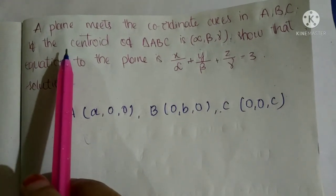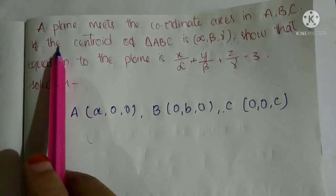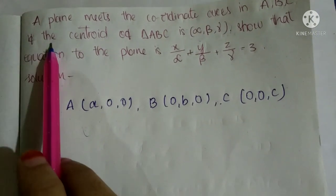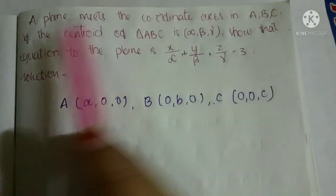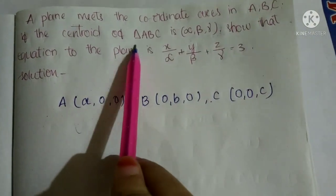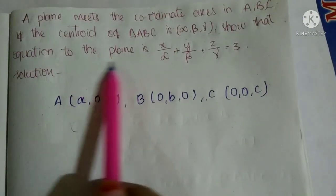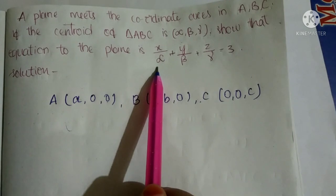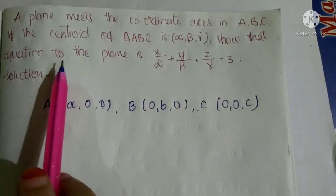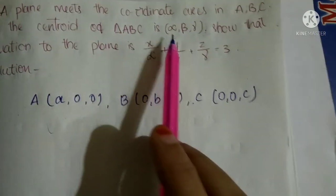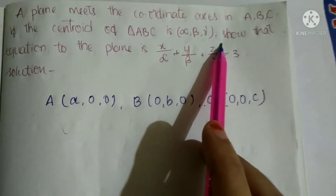Hello, welcome back to VSK. First year, second semester mathematics, important question number nine D. The question is: a plane meets the coordinate axes in A, B, C. If the centroid of triangle ABC is (α, β, γ), show that the equation of the plane is x/α + y/β + z/γ = 3.